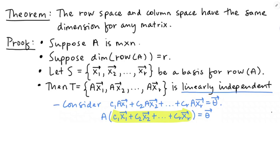I'm going to use the distributive property of matrix multiplication in reverse to factor out the A. Then I'm going to look at the stuff inside the parentheses and realize that that's just the sum of a bunch of vectors — it's actually a linear combination of the vectors in S. So I'm going to call this one vector V, defining V to be C1X1 plus C2X2 all the way up through CRXR, which when multiplied by matrix A is giving me the zero vector.